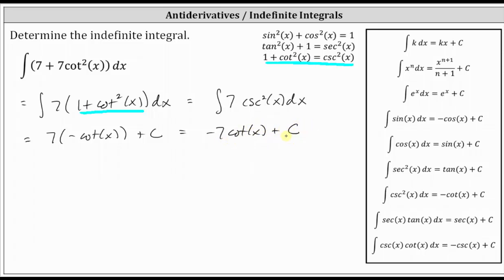We can state the antiderivative or indefinite integral using a capital letter, meaning we can state the antiderivative as big F of x equals negative seven cotangent x plus c. Which means this is the family of functions whose derivative is equal to the given integrand function of seven plus seven cotangent squared x.